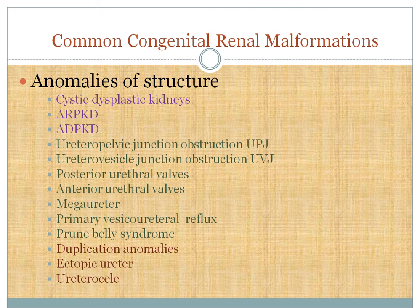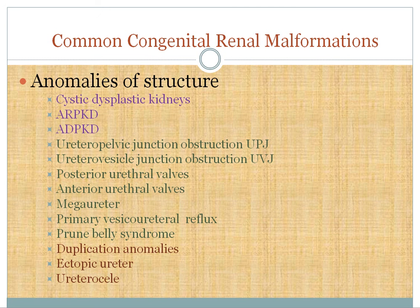Other structural anomalies include UPJ obstruction, UVJ obstruction, posterior urethral valves, and anterior urethral valves. Normally the urethra has no valves — only sphincters, one internal and one external under voluntary control. If an abnormal muscular valve is present posteriorly it is a posterior urethral valve; anteriorly it is an anterior urethral valve. Posterior urethral valve is more common than anterior urethral valve. Also included are mega urethra and primary vesicoureteral reflux.